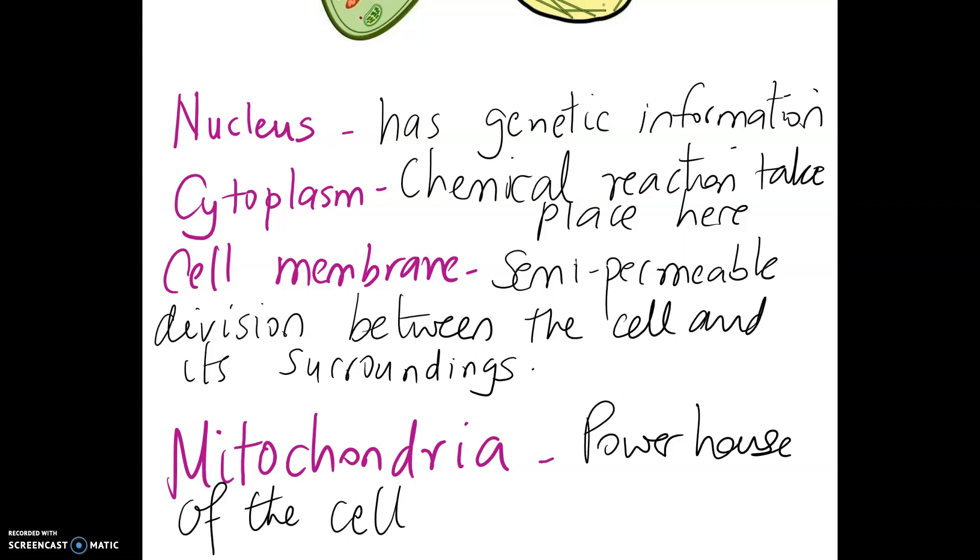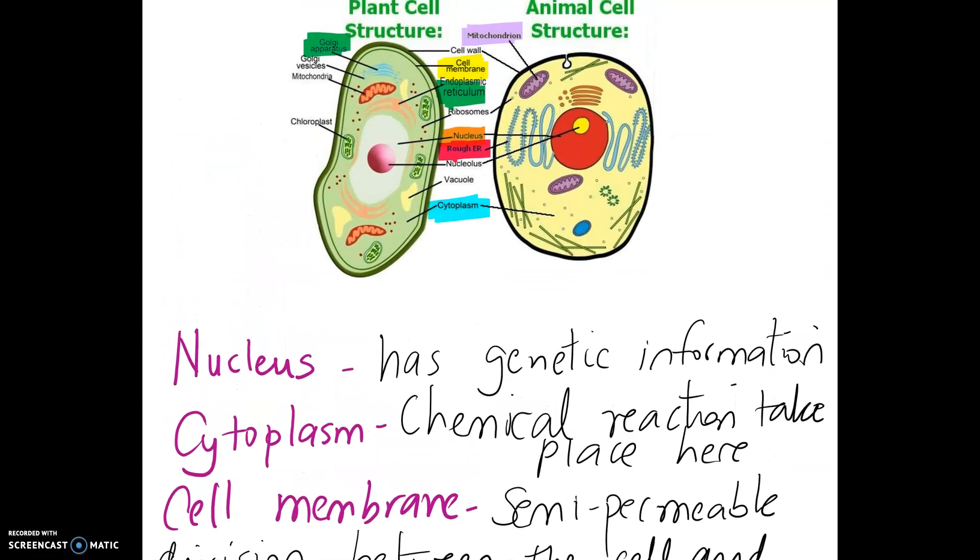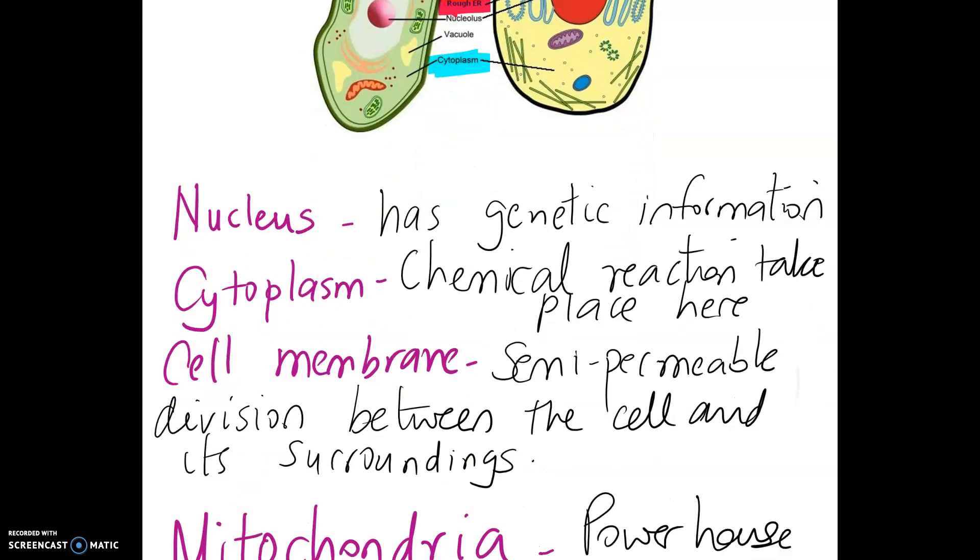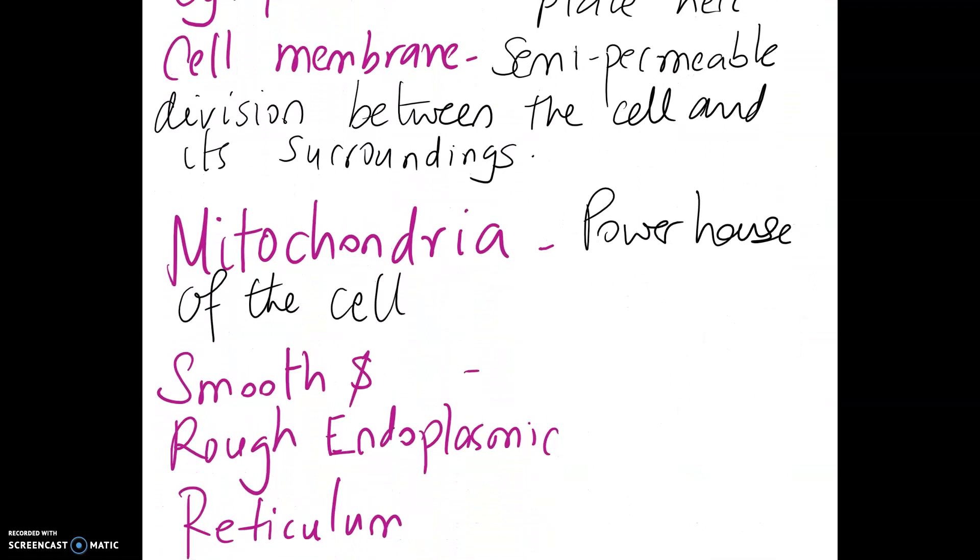Now we will be looking at smooth and rough endoplasmic reticulum which you can see is highlighted in green and in red for the rough endoplasmic reticulum. So the smooth endoplasmic reticulum is to make lipids, and the common word for lipids is fat. And the job of the rough endoplasmic reticulum is to help the production and storage of protein.